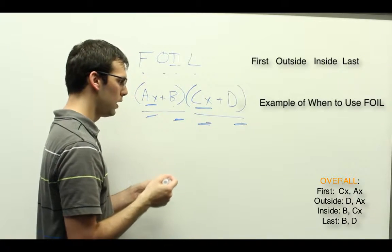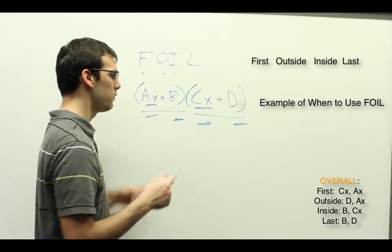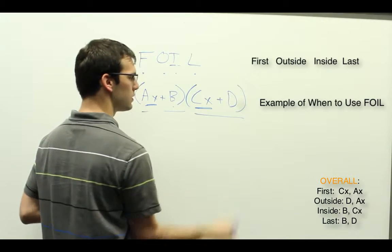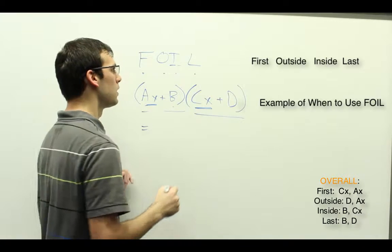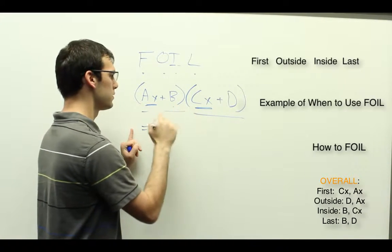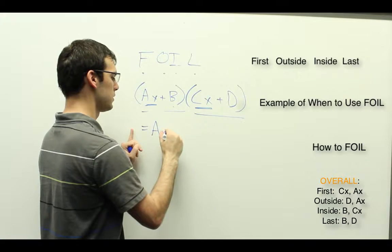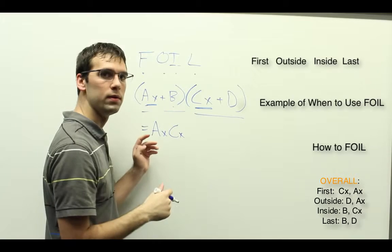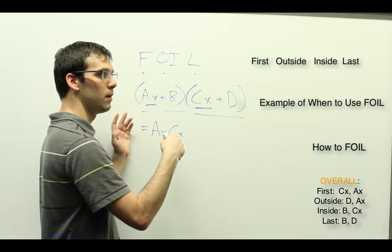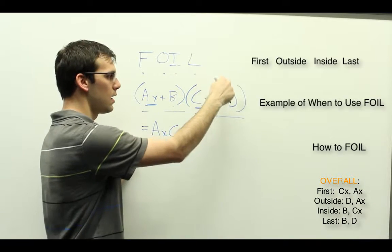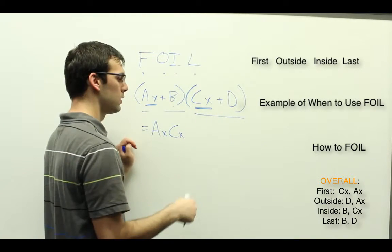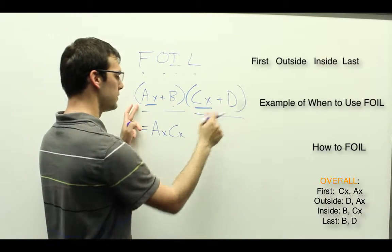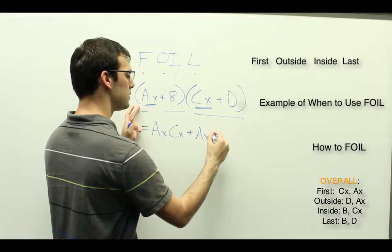Okay, so if we multiply this out, we have that this equals, and we first multiply the first terms. So we get AX times CX. Outside, so we're going to be multiplying each of these things together and adding them. So outside, we would do AX times D.